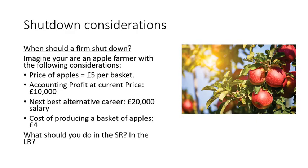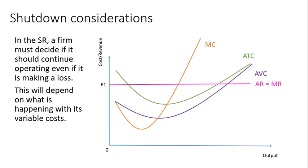The last bit in this video: when should a firm shut down, when should it leave the industry? In the short run, a firm must decide if it should continue operating even if it's making a loss — it will depend on what's happening with its variable costs. This is the only time you need the AVC. Mostly it's about MC, ATC, AR, and MR, but when talking about shutdown it's not a bad idea to have the AVC in there.